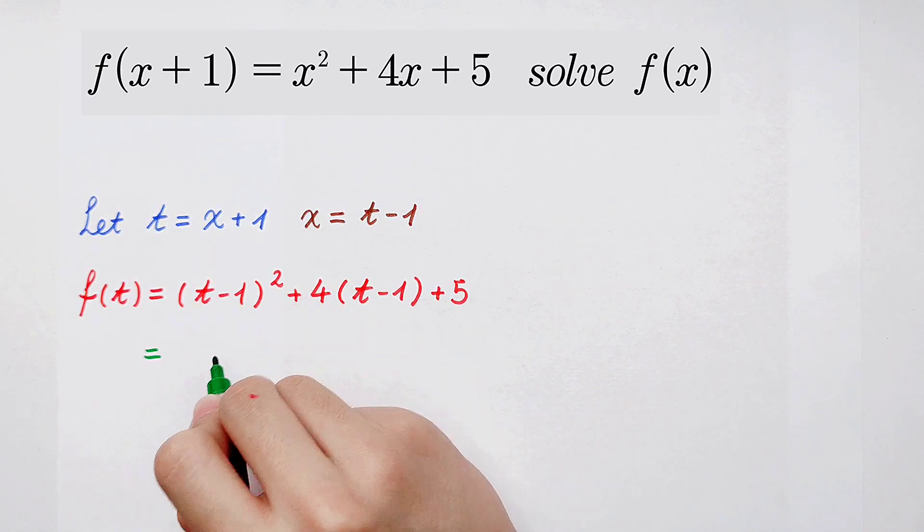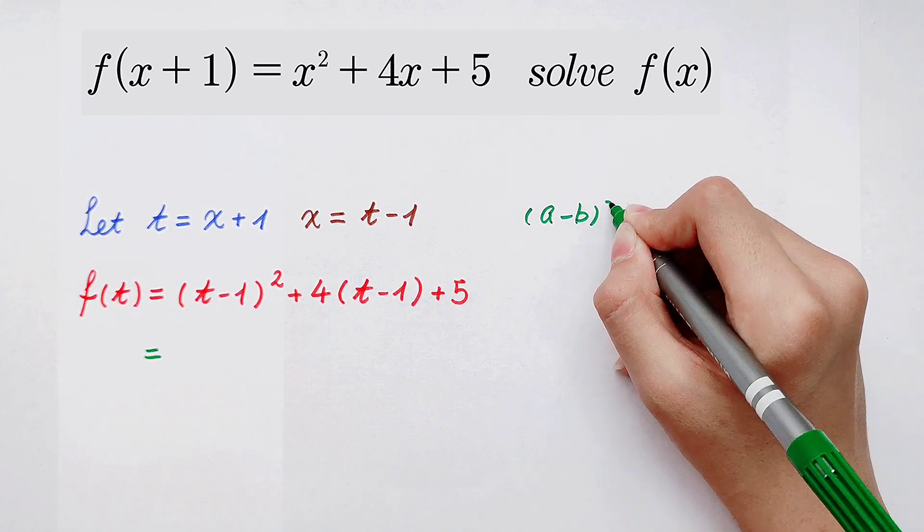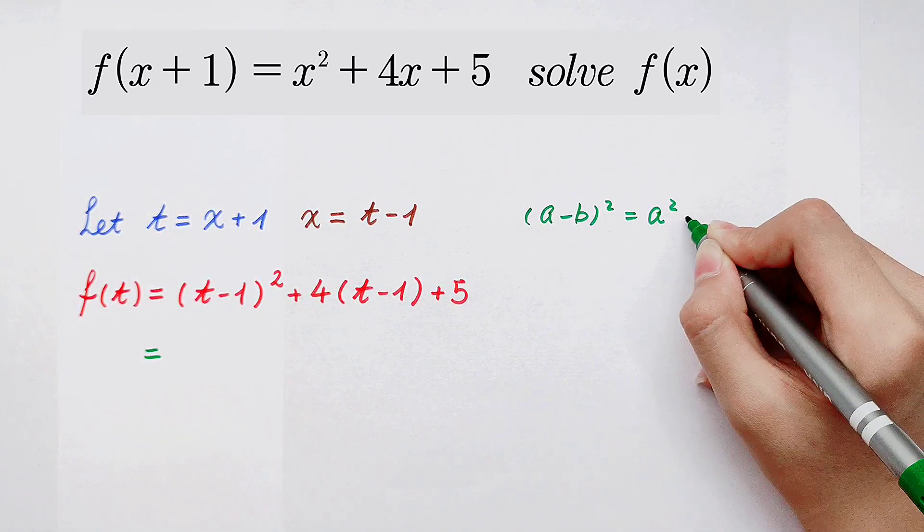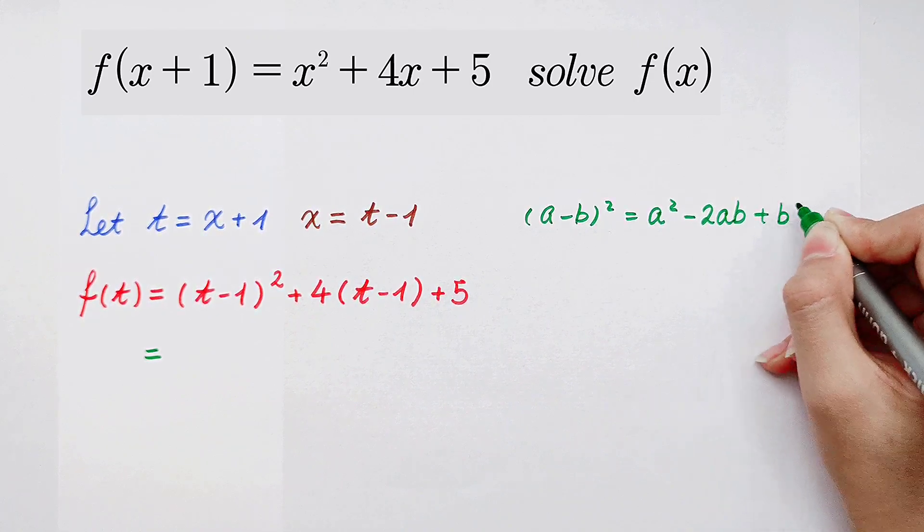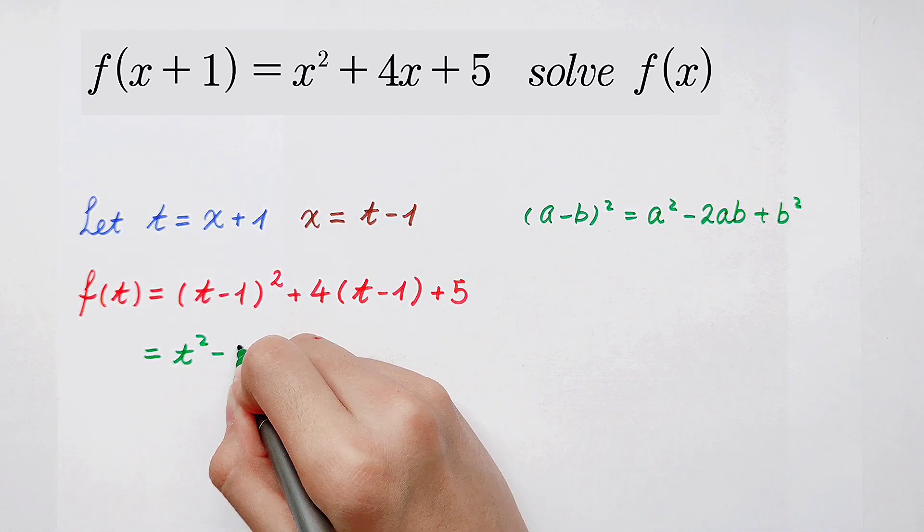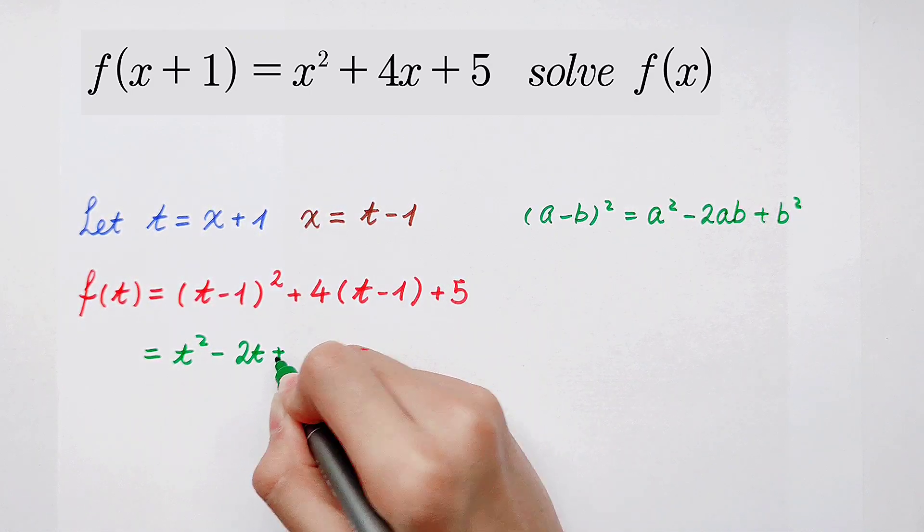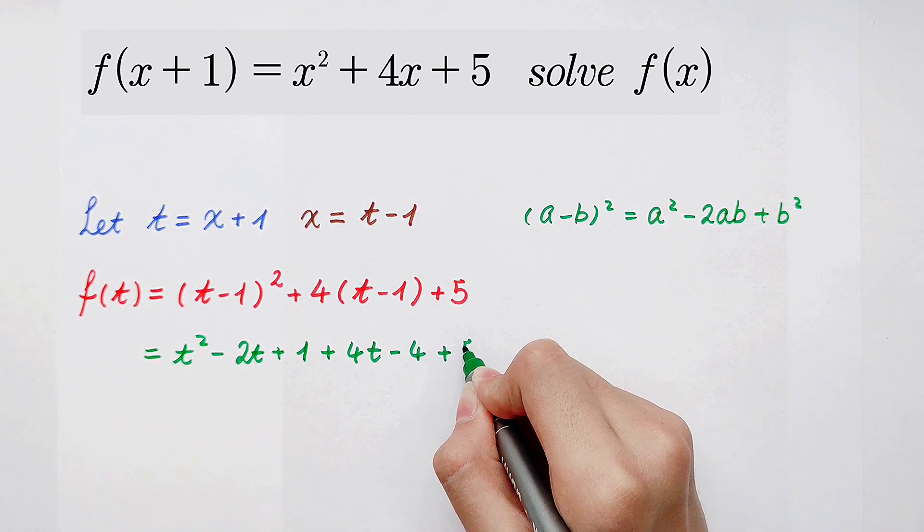t minus 1 squared. We use this formula: a minus b squared is a squared minus 2ab plus b squared. So it is t squared and then minus 2t and then plus 1. Here is 4 plus 4t and then minus 4 and then plus 5.